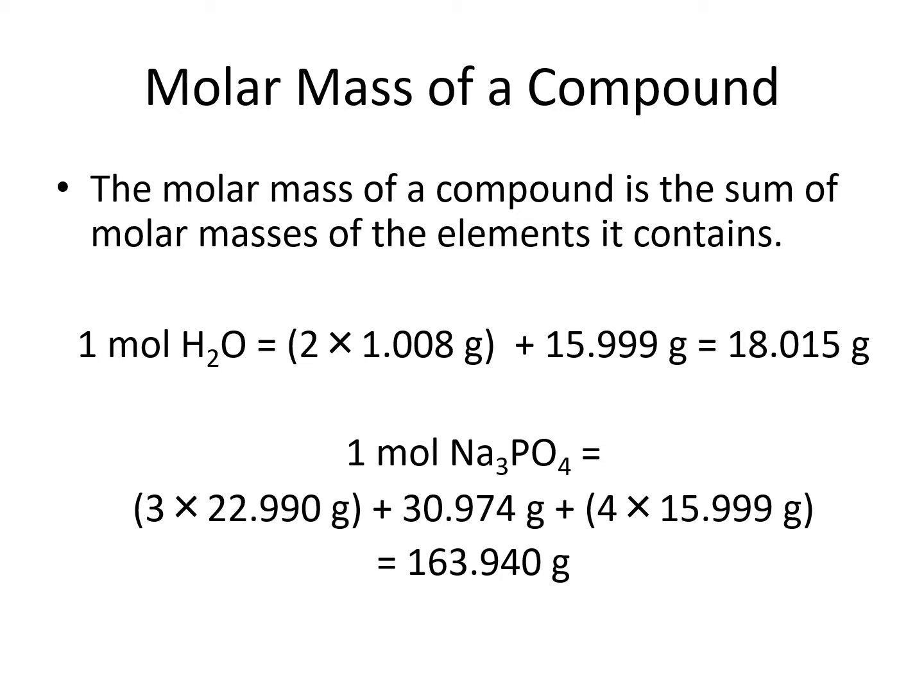To find the molar mass of sodium phosphate, we would add 3 times the mass of sodium, plus 1 times the mass of phosphorus, plus 4 times the mass of oxygen from the periodic table.